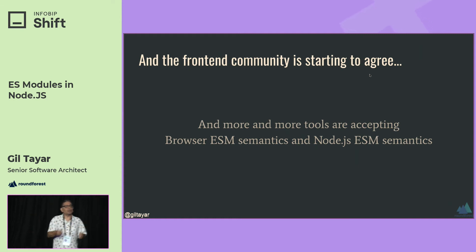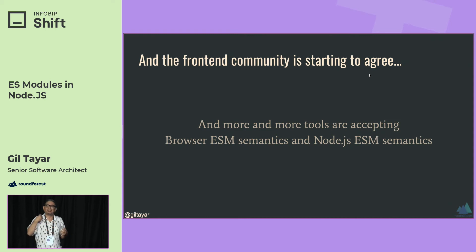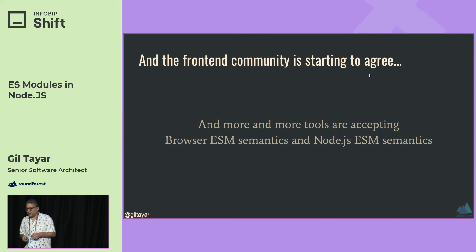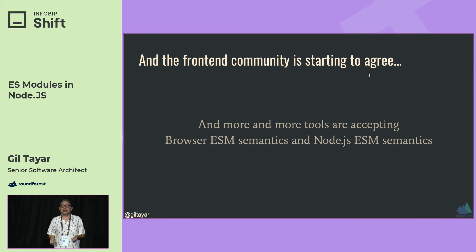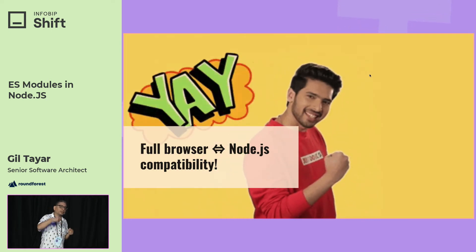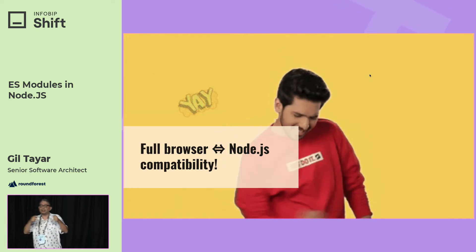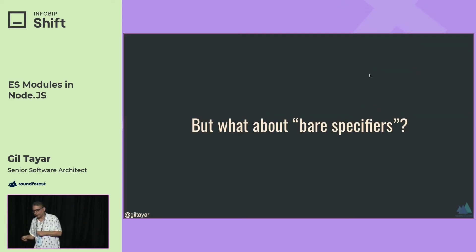The front-end community is starting to agree that faux modules are a thing of the past. They'll still support it for years to come, but they want to align browser ESM semantics, Node.js ESM semantics, and Webpack/Rollup semantics. We are going to a world where there's full browser and Node.js compatibility in terms of a module system, and this is important.